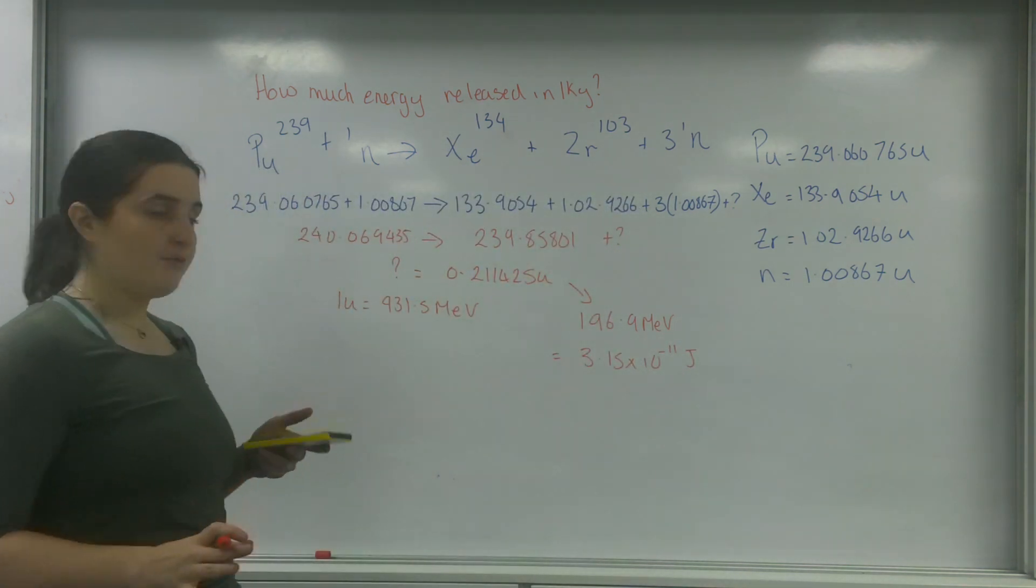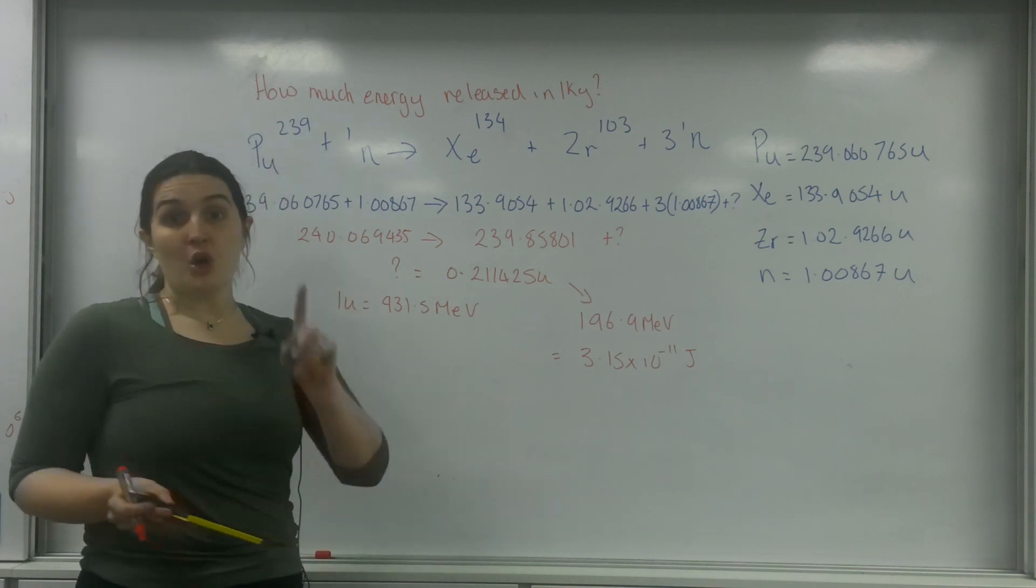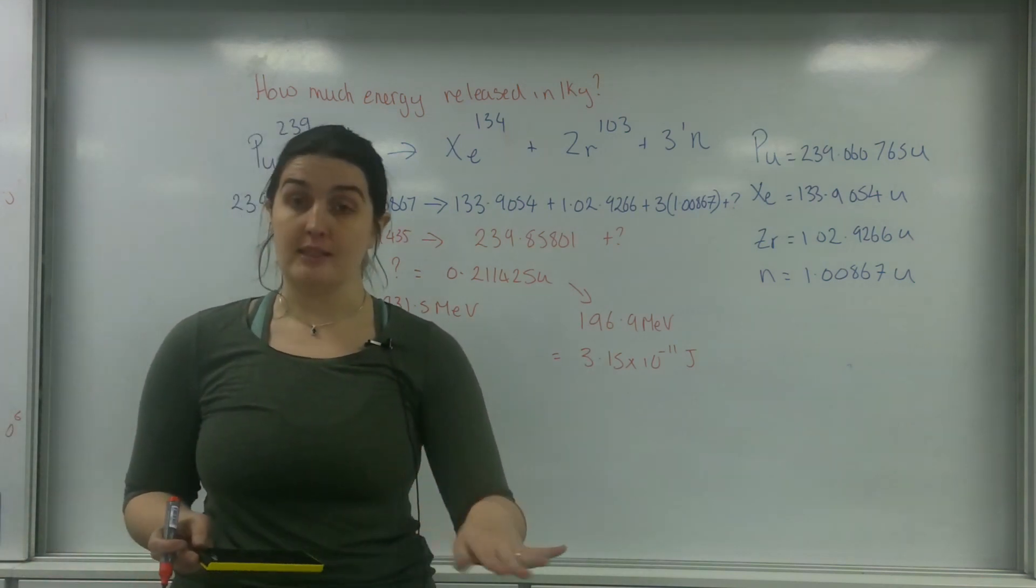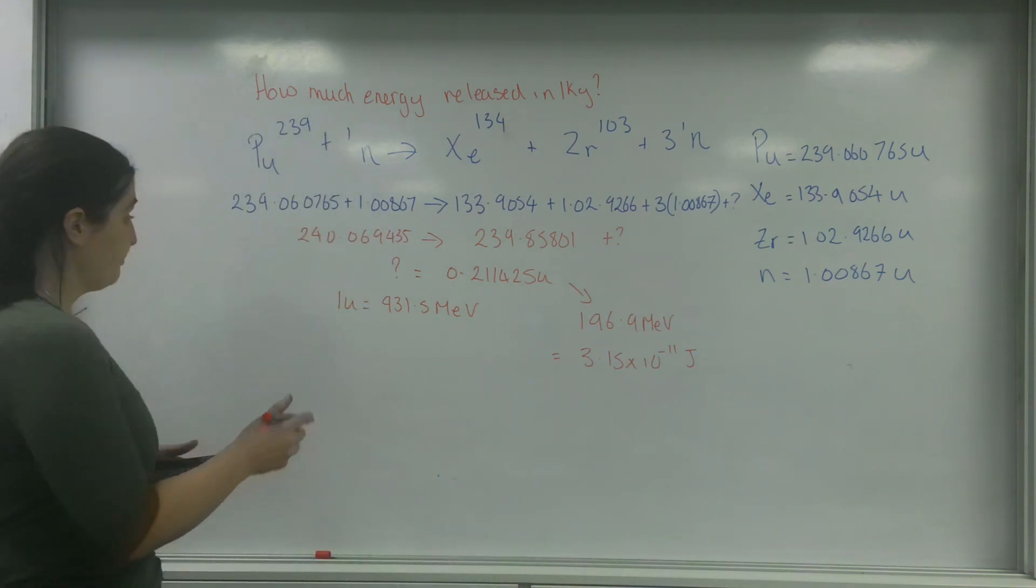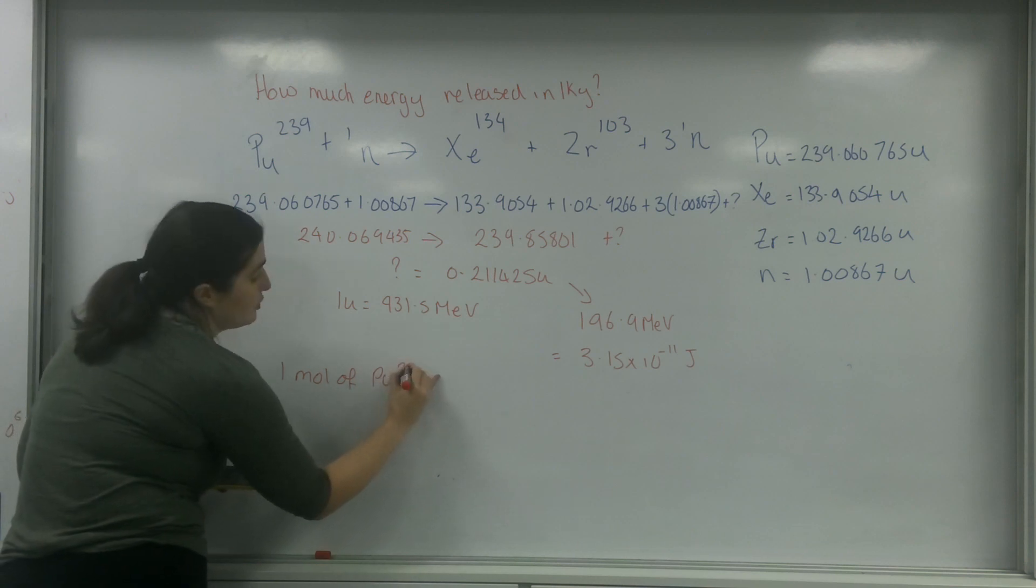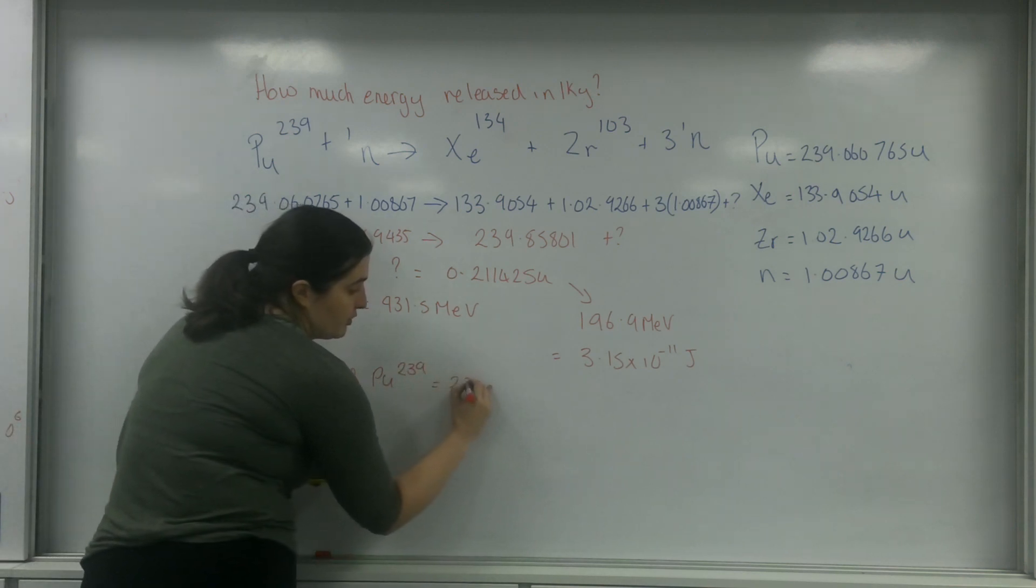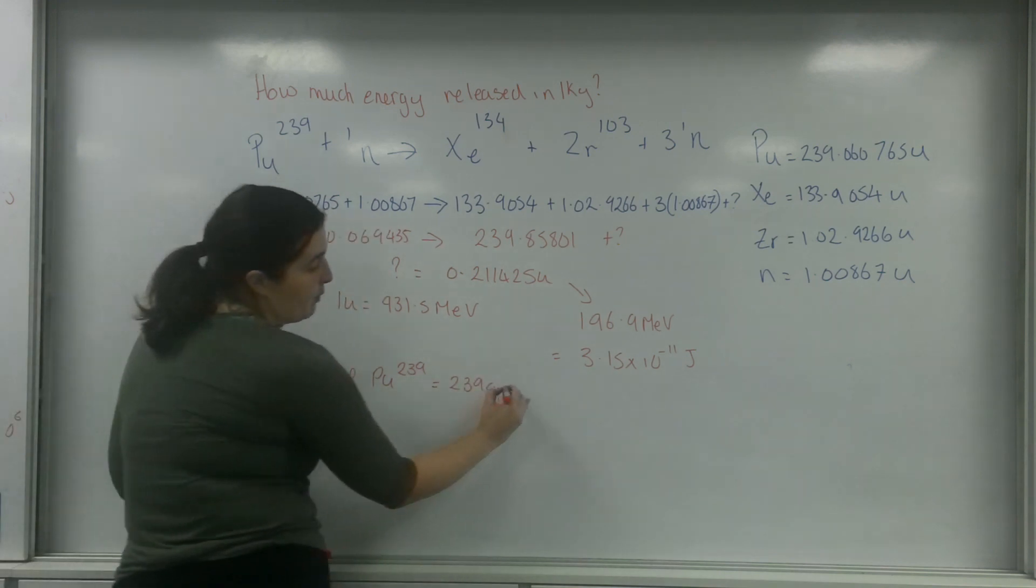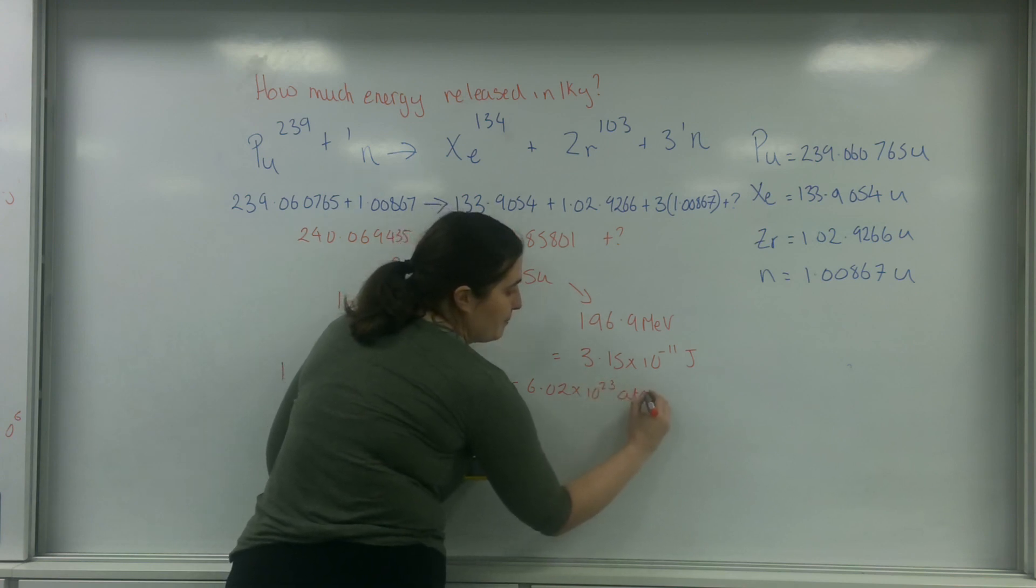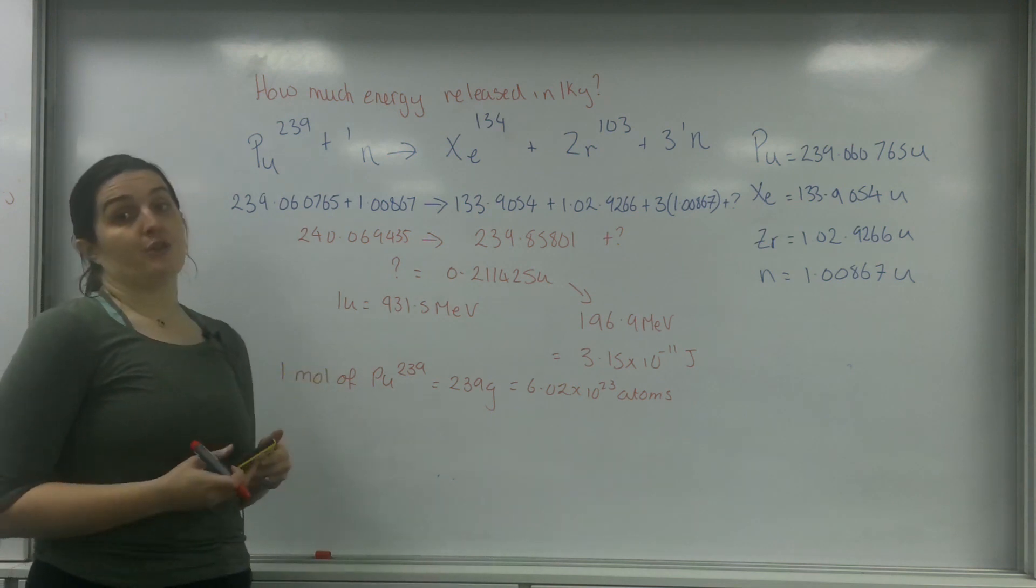So this one reaction is going to give me 3.15 times 10 to the minus 11 joules. I want to know how much one kilo of the stuff is going to give out, so I need to find out how many reactions are going to take place. I know one mole of polonium-239 is 239 grams and will have 6.02 times 10 to the 23 atoms in it from Avogadro's constant.